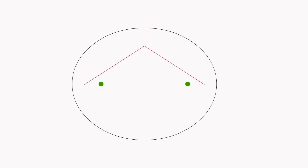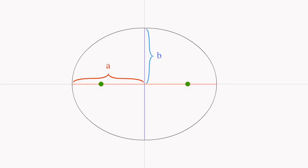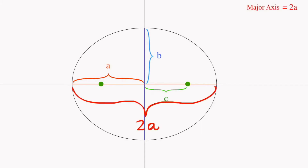When we extend the string horizontally, it is the longest diameter of the ellipse called the major axis, and the shortest diameter of the ellipse is called the minor axis. Let's call half the length of the major axis A, half the length of the minor axis B, and the distance from the center to one of the foci is C. Since half the length of the major axis is A, then the whole length is actually 2A.